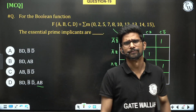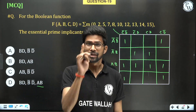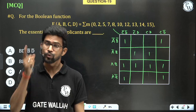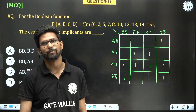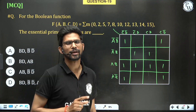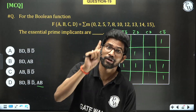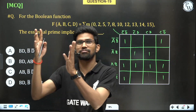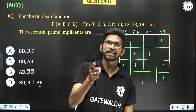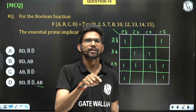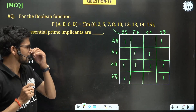What is an essential prime implicant? A prime implicant in which at least a single 1 is there which is covered only by that prime implicant is called an essential prime implicant. In other words, at least one 1 should exist that is covered only by that prime implicant — then that prime implicant is said to be an essential prime implicant.